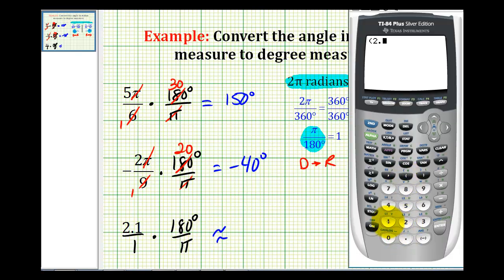We're going to have 2.1 times 180, and then we'll divide this by pi. So this angle is approximately 120.3 degrees.